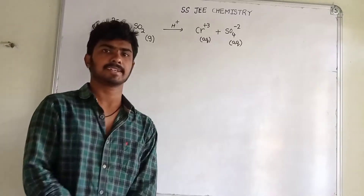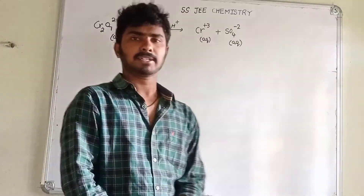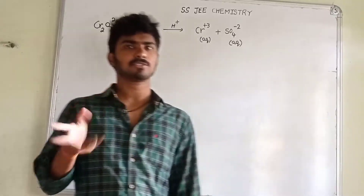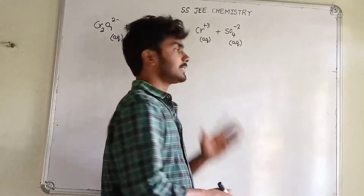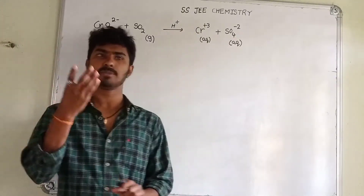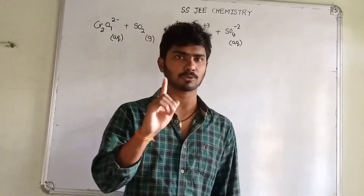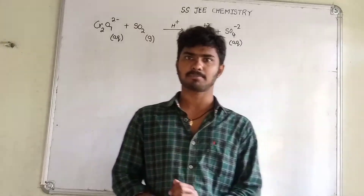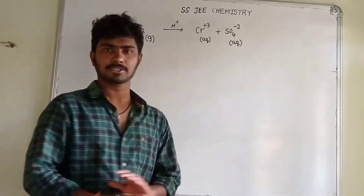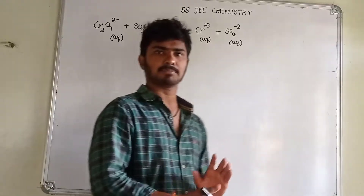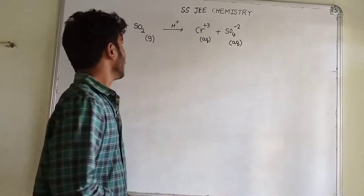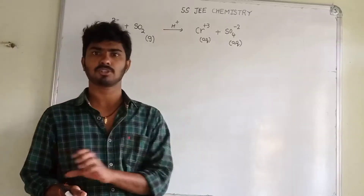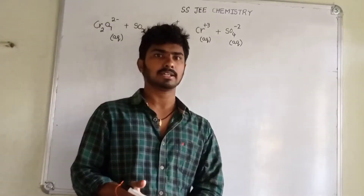Hi students, welcome to SSJAI Chemistry. We have four equations in stoichiometry. We have two equations already complete, and this third equation we have one question in public exam. So we have two questions already complete, this one is next. Now we have a short trick and we have to do that. We have the reaction starting.